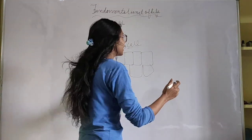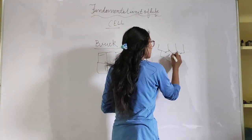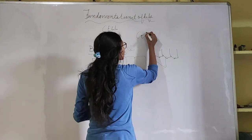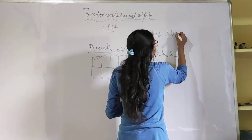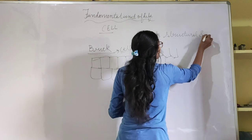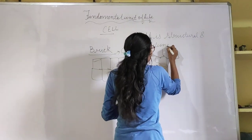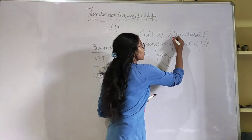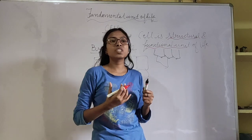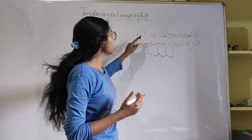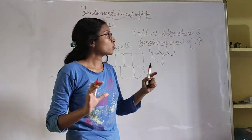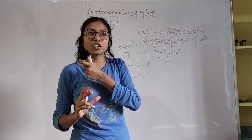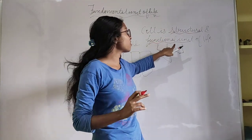Similarly, our body is also made up of various types of cells, and all these cells are helpful for performing various functions. So cell is the structural and functional unit of life. It is structural because our body is made up of cells, and functional because each cell performs different functions.